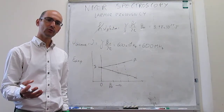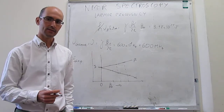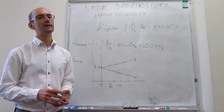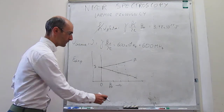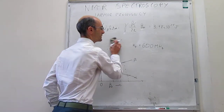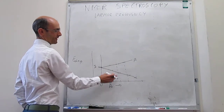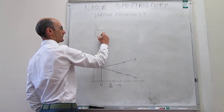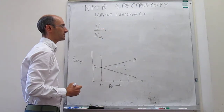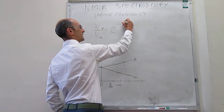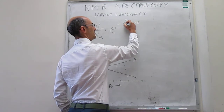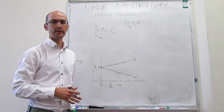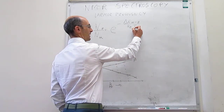The external magnetic field also matters for the intensity of the signals, which is related to the difference in population between the alpha and beta spins. We can calculate the ratio of spins in the alpha state versus the beta state using the Boltzmann expression: e to the power of (ΔE / k_B T), where ΔE is the energy difference between alpha and beta spin. Using the energy of 3.98 × 10⁻²⁶ joules and a temperature of 300 kelvin, we can evaluate this ratio.